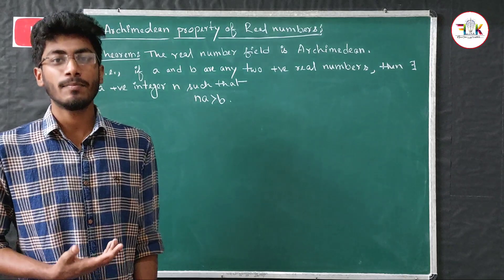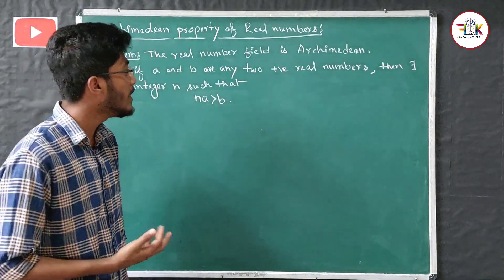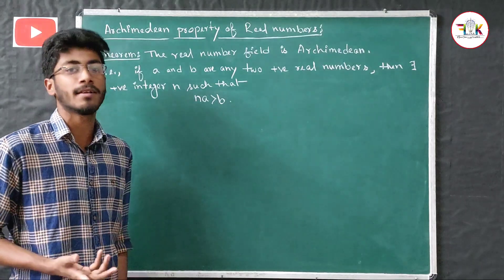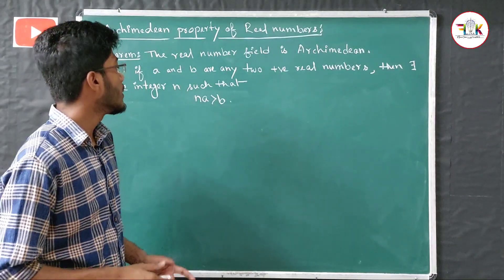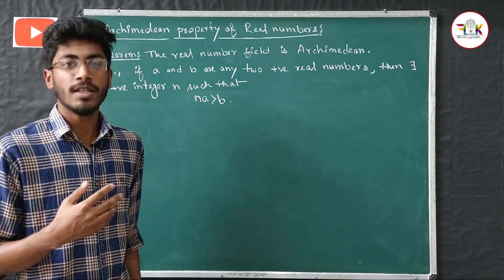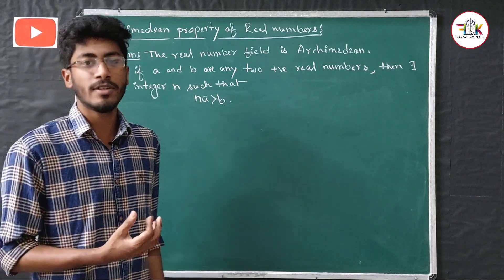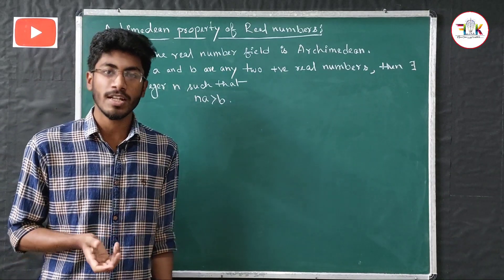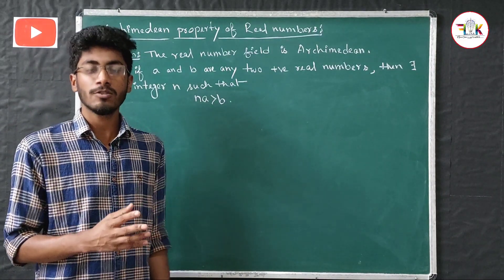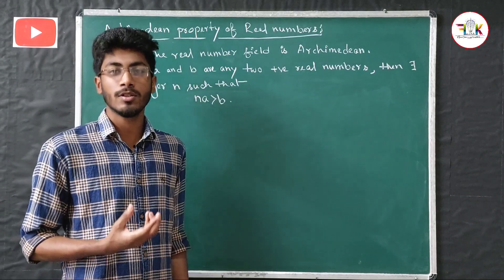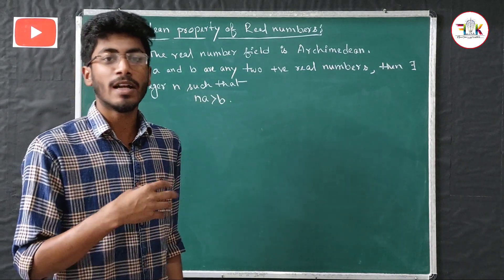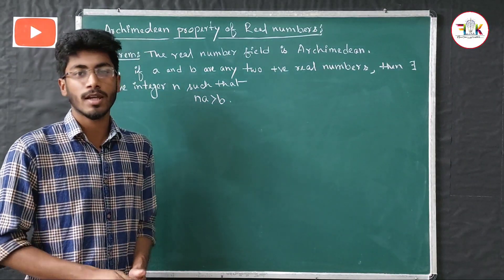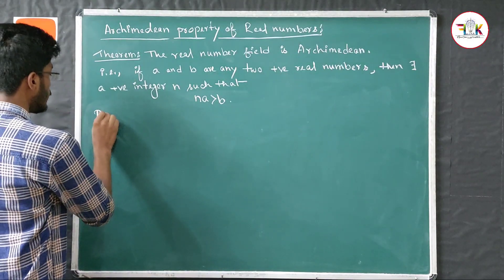That means: if a and b be any two positive real numbers, then there exists a positive integer n such that na is greater than b. So if a and b are two positive real numbers, there will exist a positive integer n such that when you multiply n with a, the result will be greater than b.